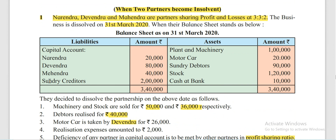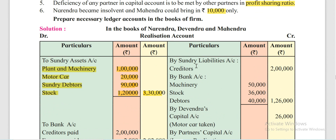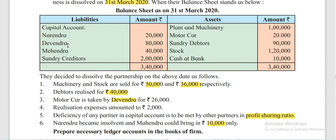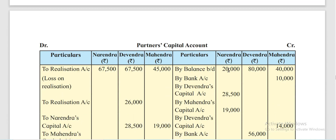Liabilities are transferred. The only liability is Sundry Creditors. So, the transfer of Sundry Creditors liability of Rs 2,00,000 is done, and then the partners' capital account balances of Narendra, Devendra, and Mahendra are also transferred.